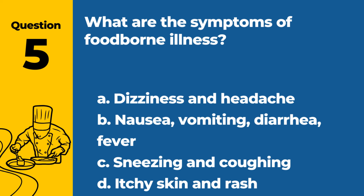Question 5. What are the symptoms of foodborne illness? a. Dizziness and headache. b. Nausea, vomiting, diarrhea, fever. c. Sneezing and coughing. d. Itchy skin and rash. Answer: b. Nausea, vomiting, diarrhea, fever. These are common symptoms of foodborne illness.